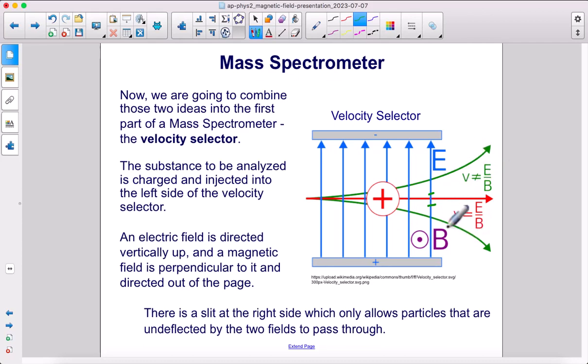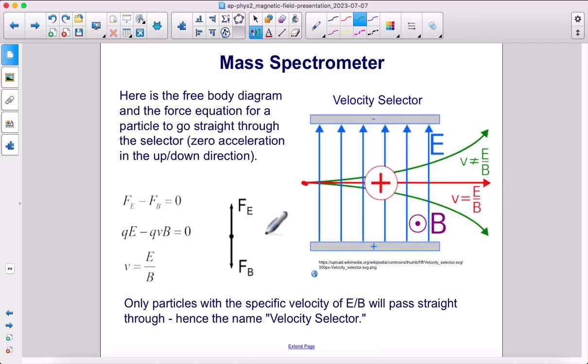We're going to go over this math on the next slide. Let's analyze the forces being exerted on this particle. And we are also assuming that gravitational effects are negligible. So the only two forces acting on this particle are the electric field upwards and the magnetic field downwards. If those are equal, it will not accelerate up or down. It will go straight. And that's what we're trying to do. We're trying to pick out all the particles that have the exact same speed.